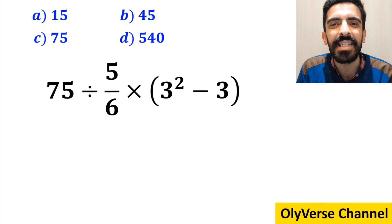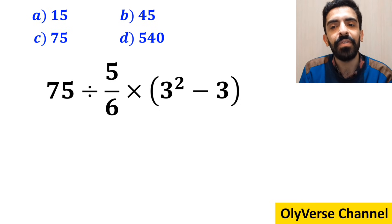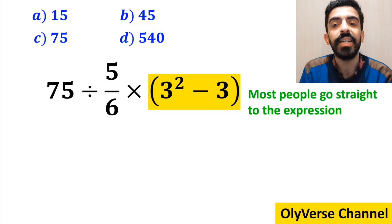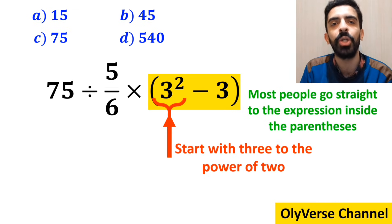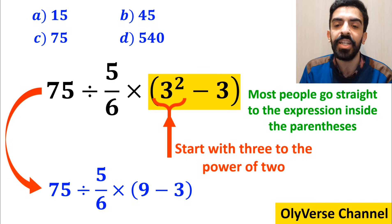Let's dive in and break it down step by step together. The first step of solving this question, most people go straight to the expression inside the parenthesis and start with 3 to the power of 2. So, instead of the original expression, they write 75 divided by 5 over 6 multiplied by 9 minus 3 inside the parenthesis.